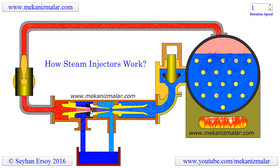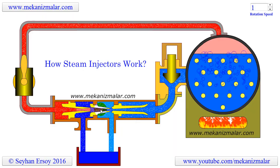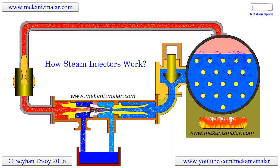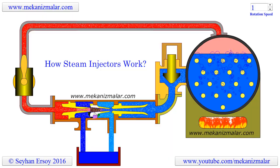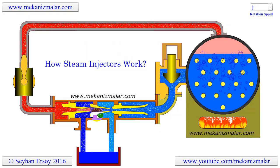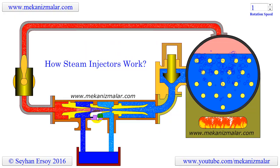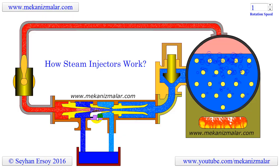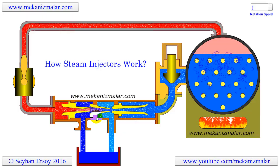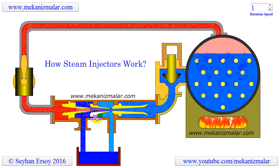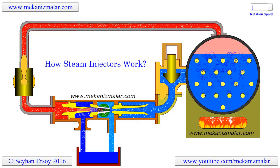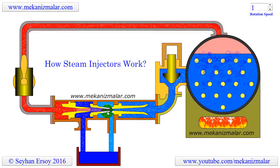During the combining process, the steam begins to condense and the water begins to get warmer. The speed of the water is increasing due to the hammer effect of the steam jet, while steam disappears from the flow by condensing as water. Further narrowing of the combining cone increases the speed of this water.